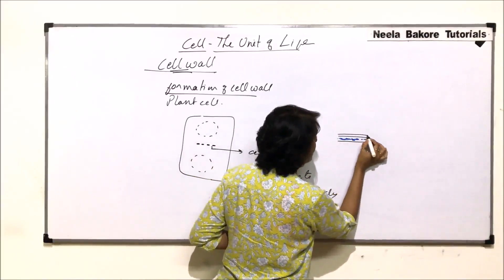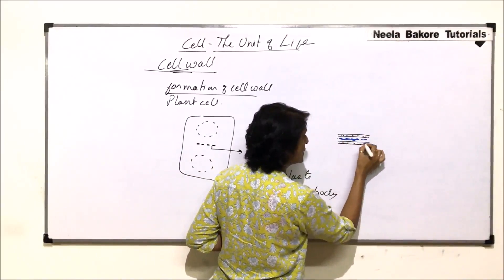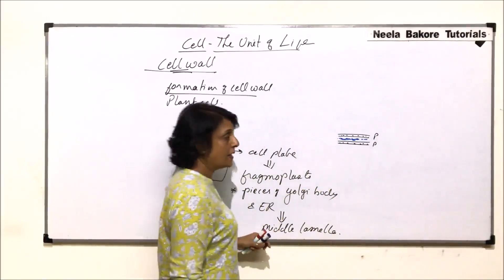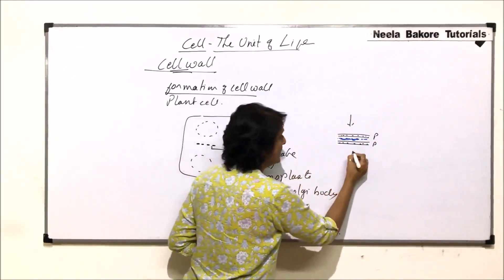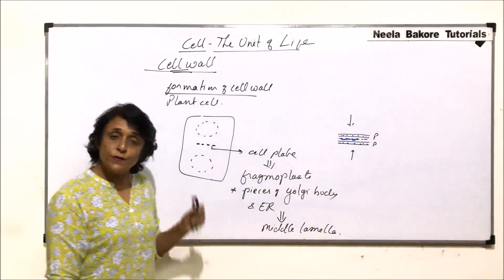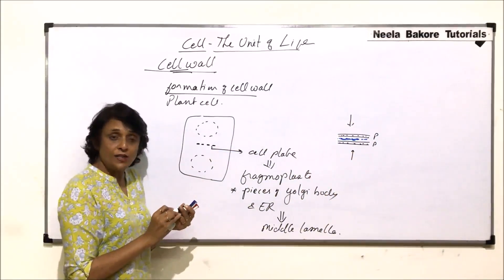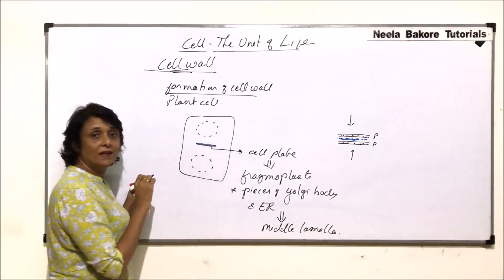So the cytoplasmic content of this cell and the other cell starts to deposit the primary cell wall around this middle lamella. This black line which we have drawn here is the primary cell wall made up of cellulose and hemicellulose. This is primary. This has been secreted by the cytoplasm of one cell, this is by the cytoplasm of the other cell.